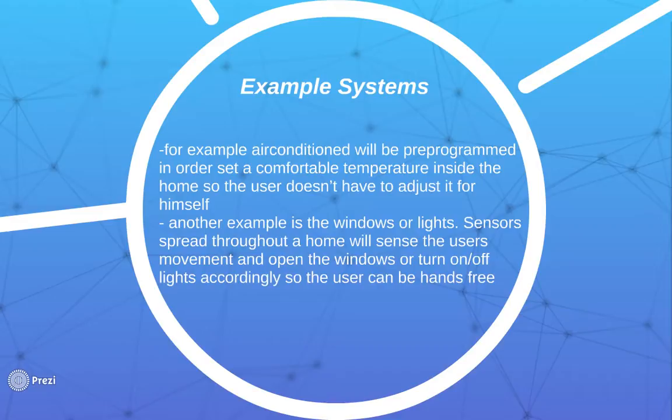Another example would be windows or lights. The smart home would sense that the user walked into a room and the lights would turn on or the window shades would open. Inversely, if a user walks out of the room, the sensor would then turn off all of the lights.